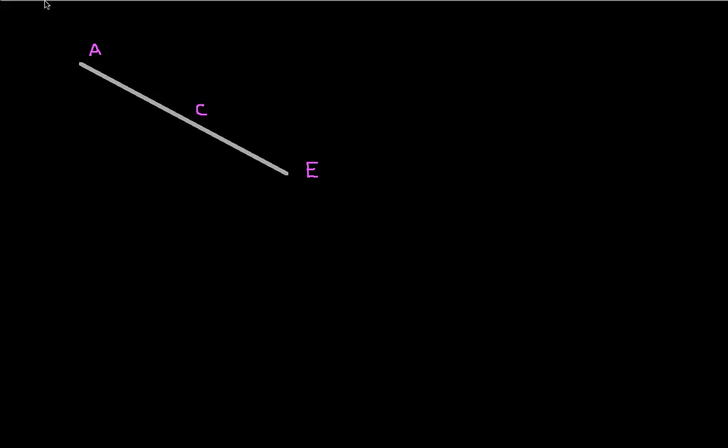So let's go to the last free body diagram. I've chosen to do this one member, so there's a pin at A, a pin at C, and a pin at E.